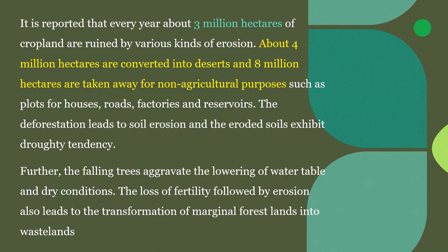It has been reported that every year about three million hectares of cropland are ruined by various kinds of erosion, about four million hectares are converted into deserts, and eight million hectares are taken away for non-agricultural purposes such as infrastructure and buildings. Deforestation is a major problem, as deforested soil exhibits droughty tendency which later converts into wasteland.